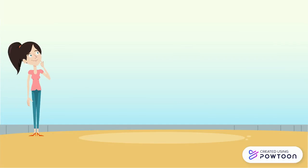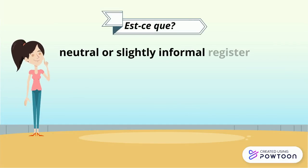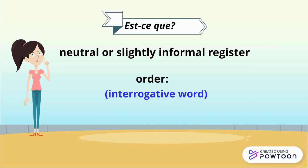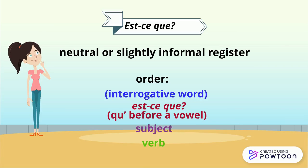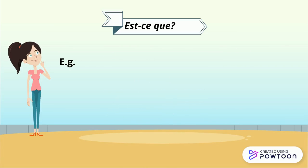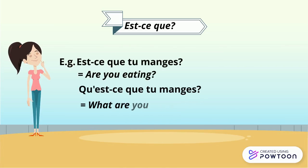Firstly, the expression est-ce que corresponds to a fairly neutral or slightly informal register. The order is: interrogative word (if any), plus est-ce que — or qu' before a vowel — plus subject, plus verb. For instance: "est-ce que tu manges?" — are you eating? "Qu'est-ce que tu manges?" — what are you eating?